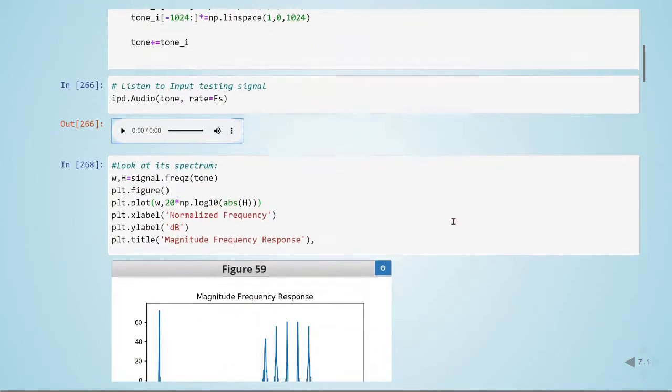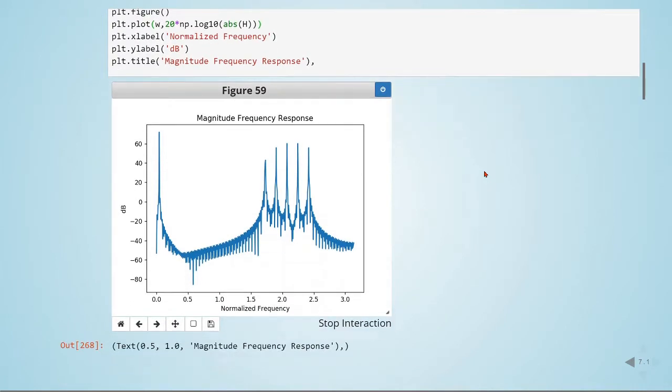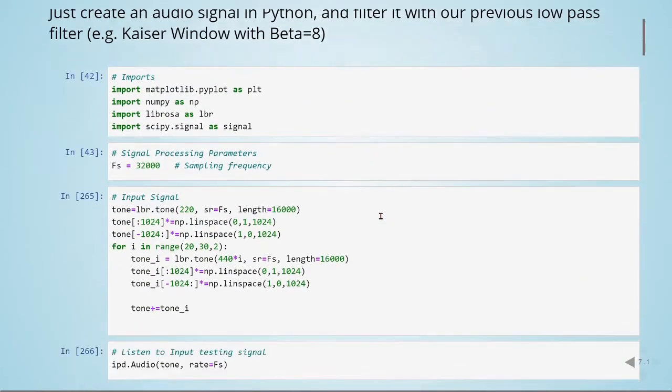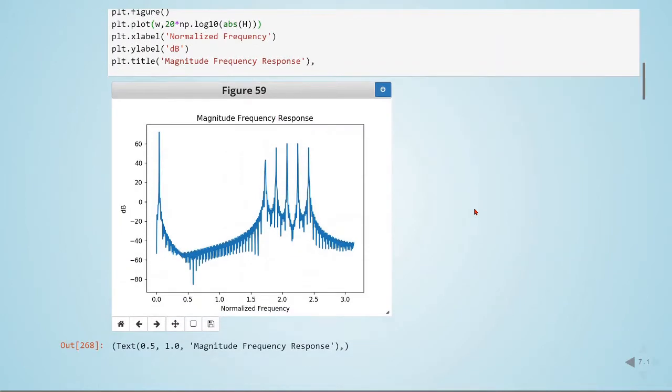When we look at its frequency spectrum we see that we have our frequency of 220 Hertz here, and then we have all these frequencies above 8 kilohertz. We are using a 32 kilohertz sampling frequency so our Nyquist frequency is 16 kilohertz and omega equals pi, and half pi would be approximately 8 kilohertz, so we have all these frequencies over 8 kilohertz.